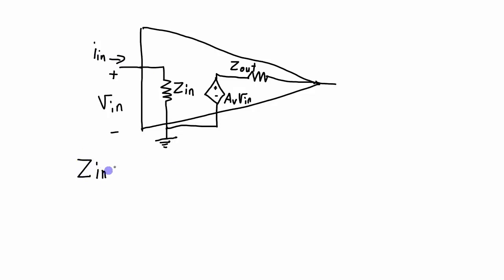This input impedance is a characteristic of the amplifier, but it can be determined by knowing what the input voltage is and measuring the input current going into the amplifier. By definition, the input impedance is equal to the input voltage divided by the input current. Typically, if the signal is sinusoidal, you take the peak input voltage and the peak input current, divide those two numbers, and that gives you the input impedance. Now let's take a look at why the input impedance is such an important characteristic of an amplifier.